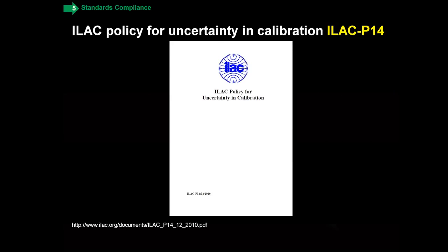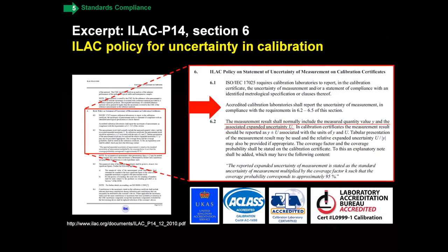Finally, I want to talk about the ILAC policy for uncertainty in calibration — ILAC P14. Notice that this is a policy document, so it's very strong: it's not just a guide, it's a policy. This is what dictates the rules that accreditation bodies have to follow. Paragraph six says that accredited calibration laboratories shall report the uncertainty of measurement in compliance with the requirements. The bottom line is: everything we talked about in section three of the series — the measurement uncertainty — you must include and report that if you want to include the accreditation symbol on the calibration certificate.